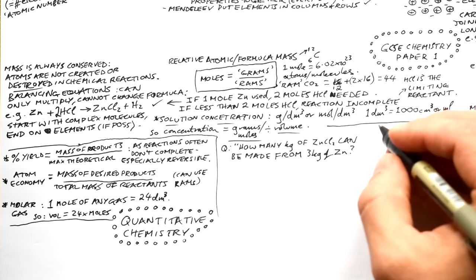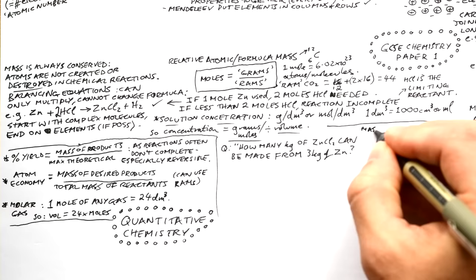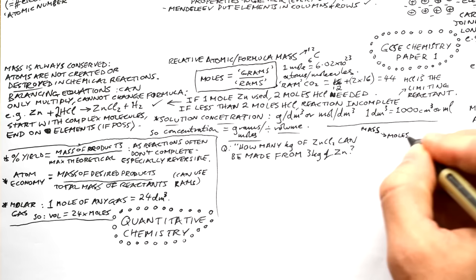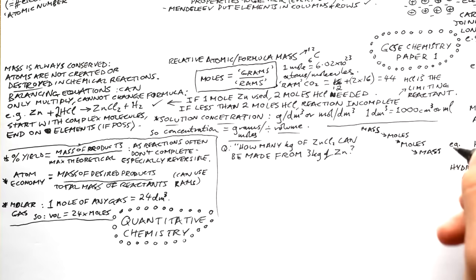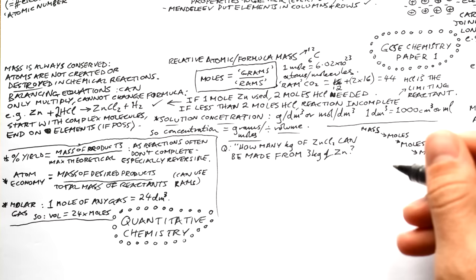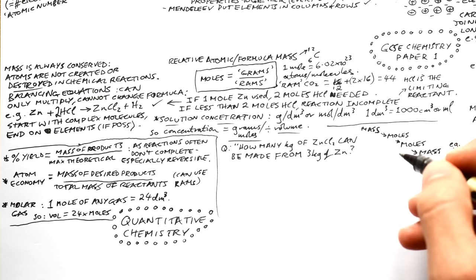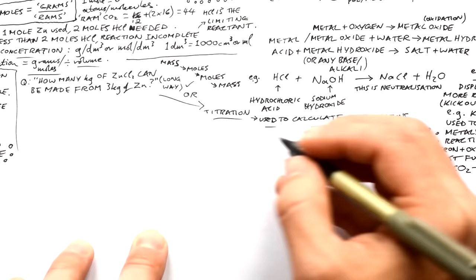Here's a typical exam question: how many kilograms of zinc chloride can be made from 3 kg of zinc? First, convert mass to moles: moles = mass ÷ RAM (units can stay as kg as long as you're consistent). Then use the molar ratio from the equation — one mole of zinc gives one mole of zinc chloride. Finally, convert moles of product back into mass using the equation again. If the question asked about HCl, the factor of 2 in front would change the molar ratio.